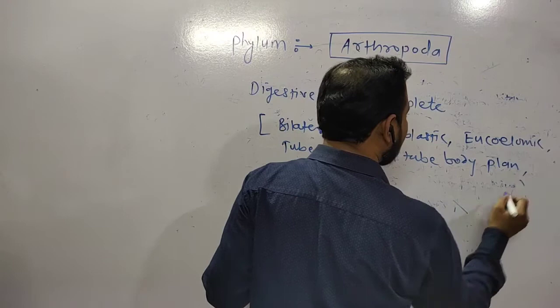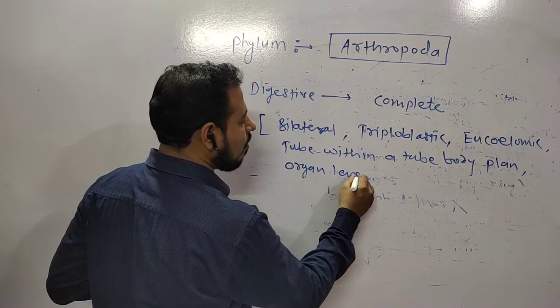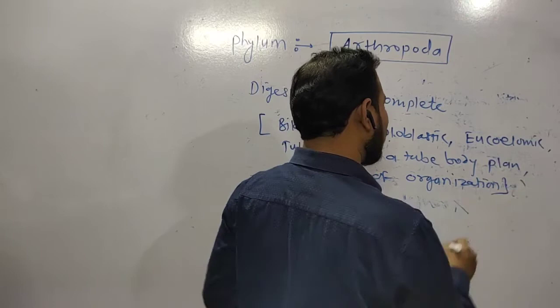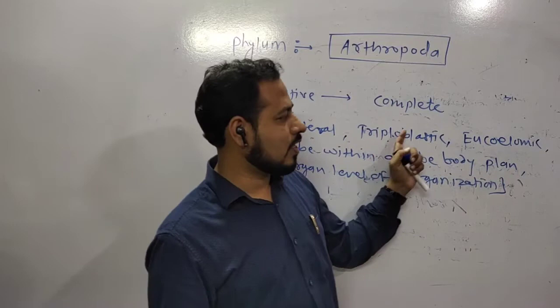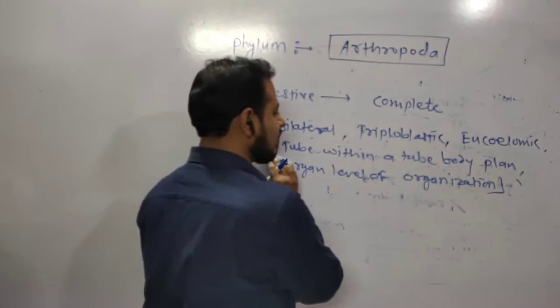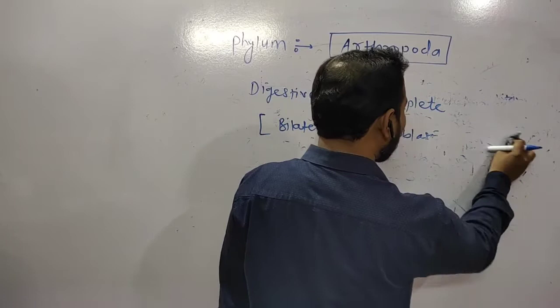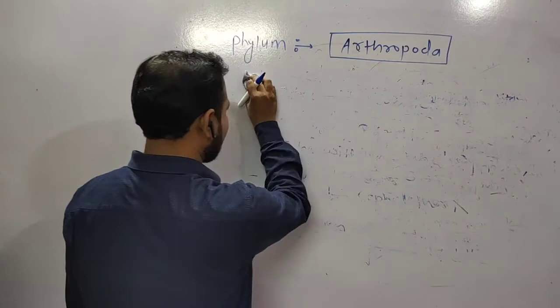General features - you can say these animals are bilaterally symmetrical, they are bilateral of course. These animals are triploblastic - made from three germ layers. They are eucoelomic with prominent coelom. They show tube within a tube body plan. Along with this, they have organ development, that's how they show organ level of organization in the body.